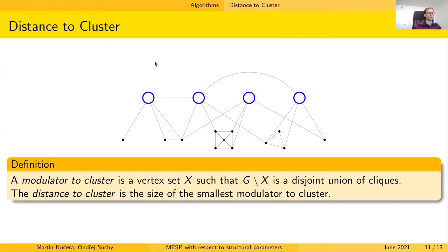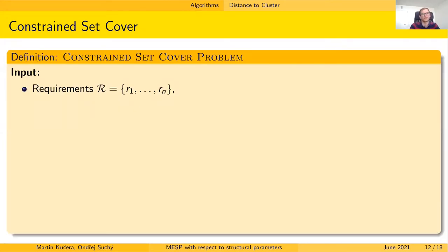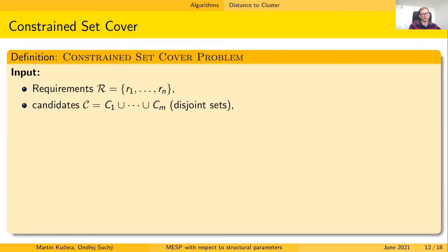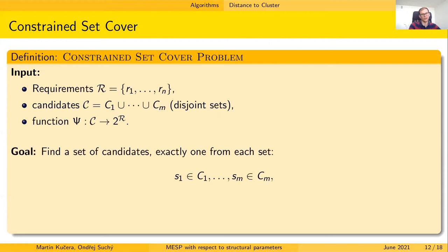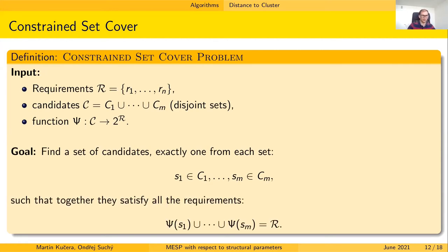We want an FPT algorithm for the Minimum Eccentricity Shortest Path problem parameterized by the distance to cluster. The algorithm takes the modulator to cluster as additional input. Before diving into it, let me define a seemingly unrelated problem that will turn out to be very useful: the Constraint Set Cover problem. We are given a set of requirements, a family of disjoint sets of candidates, and a function that determines which requirements each candidate satisfies. The goal is to choose exactly one candidate from each set so that together they satisfy all requirements.